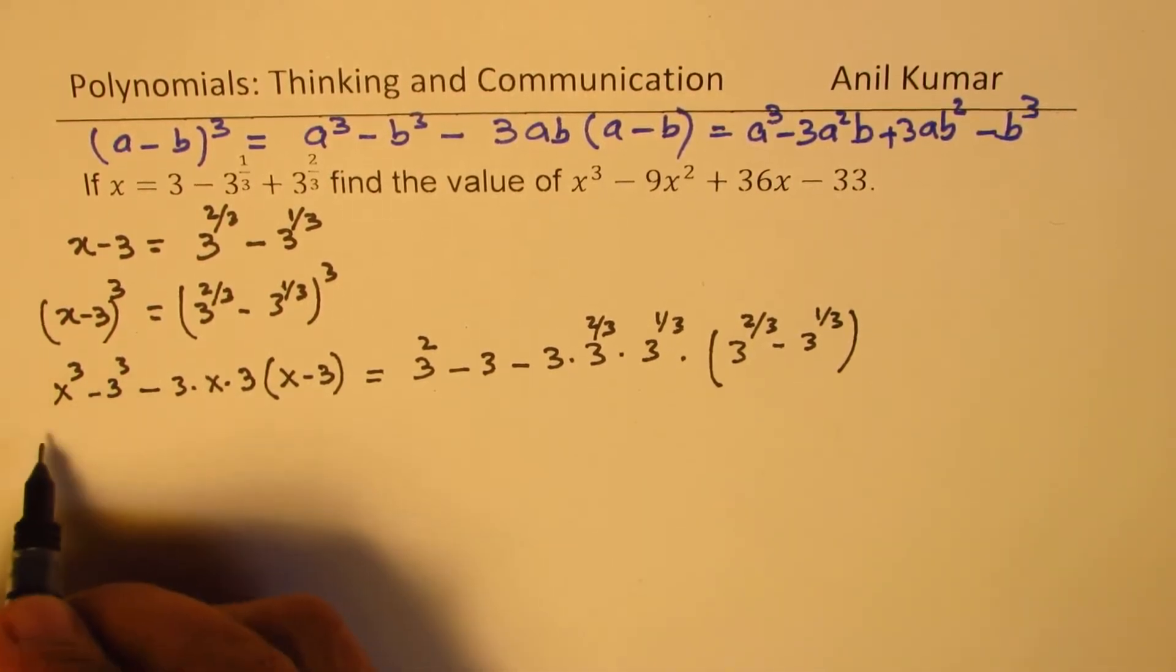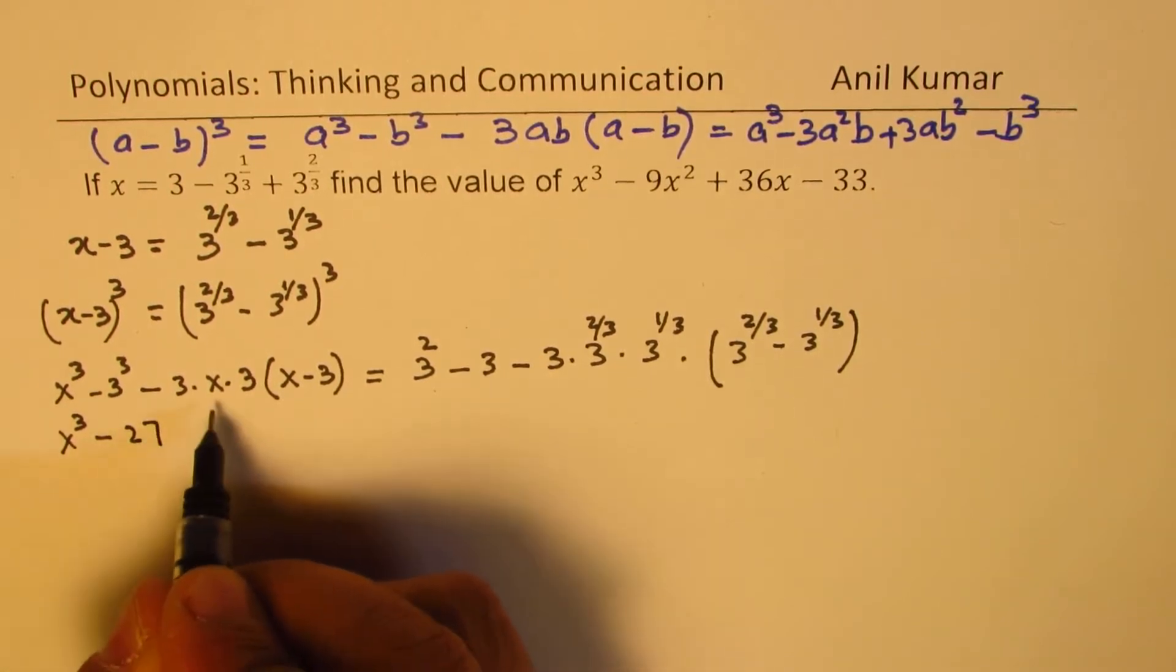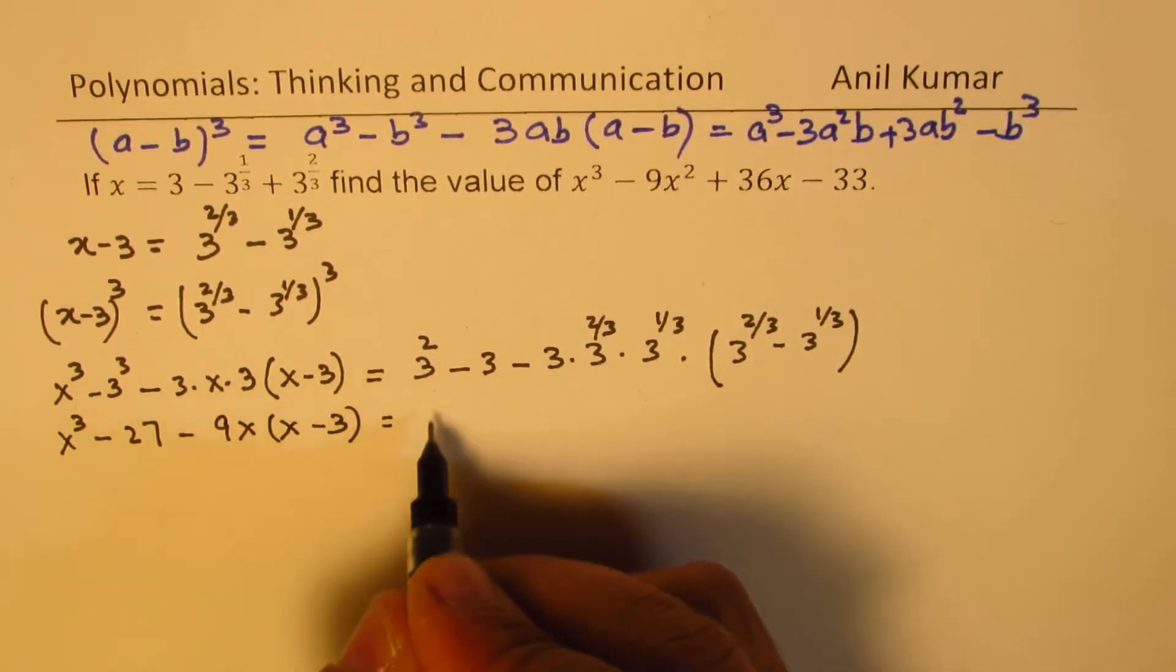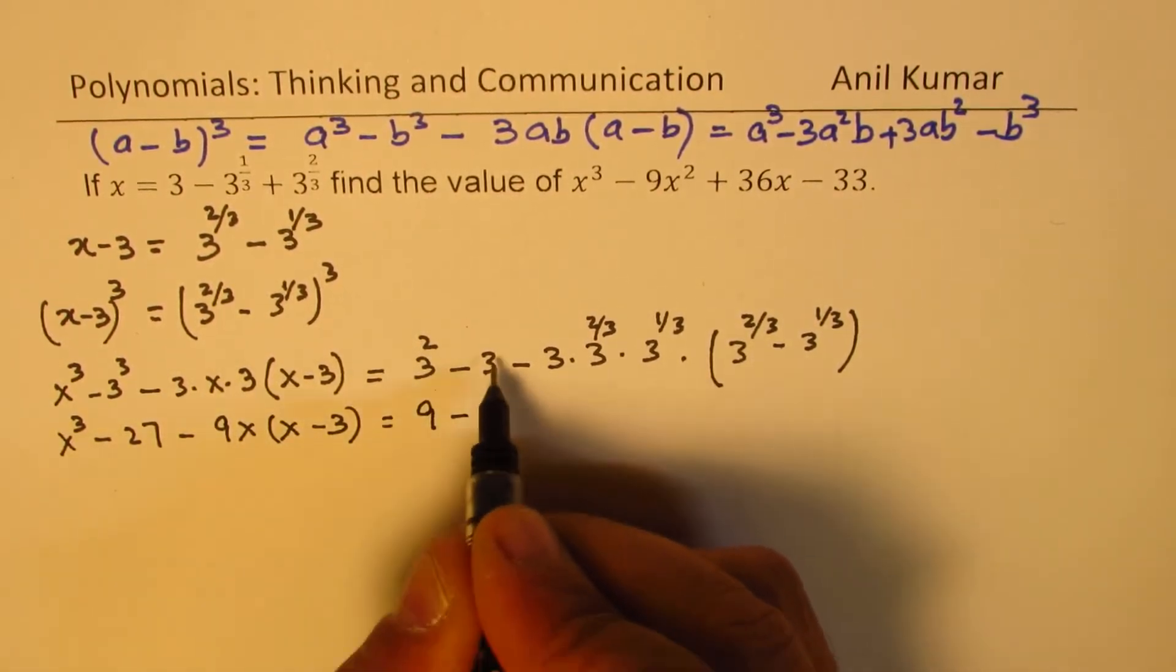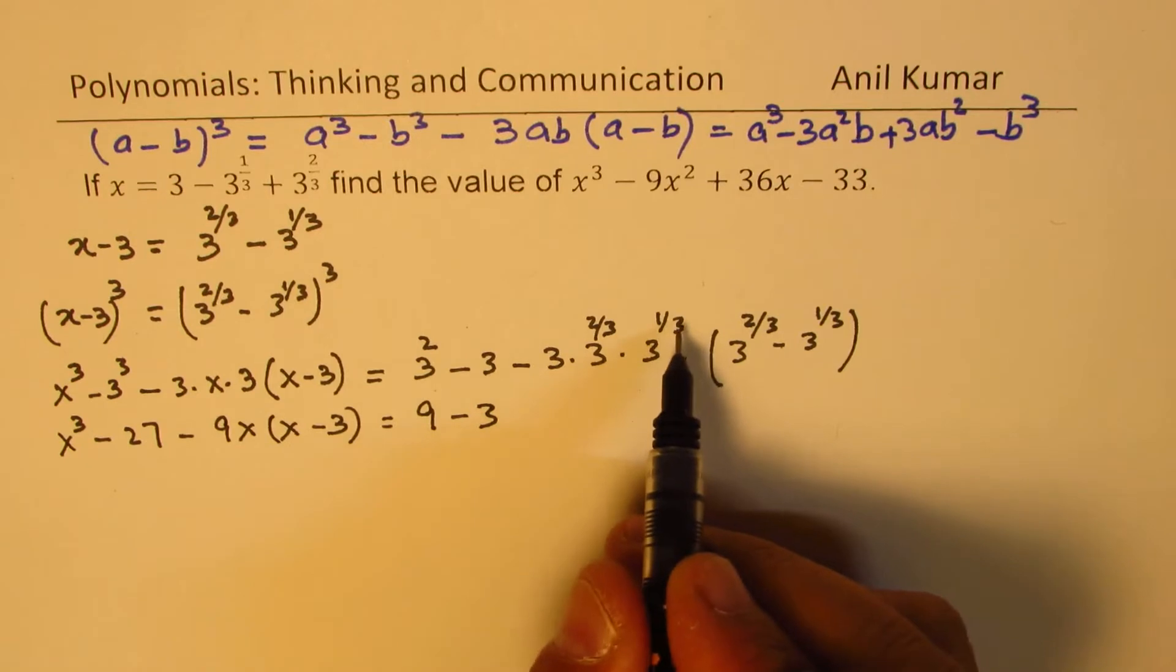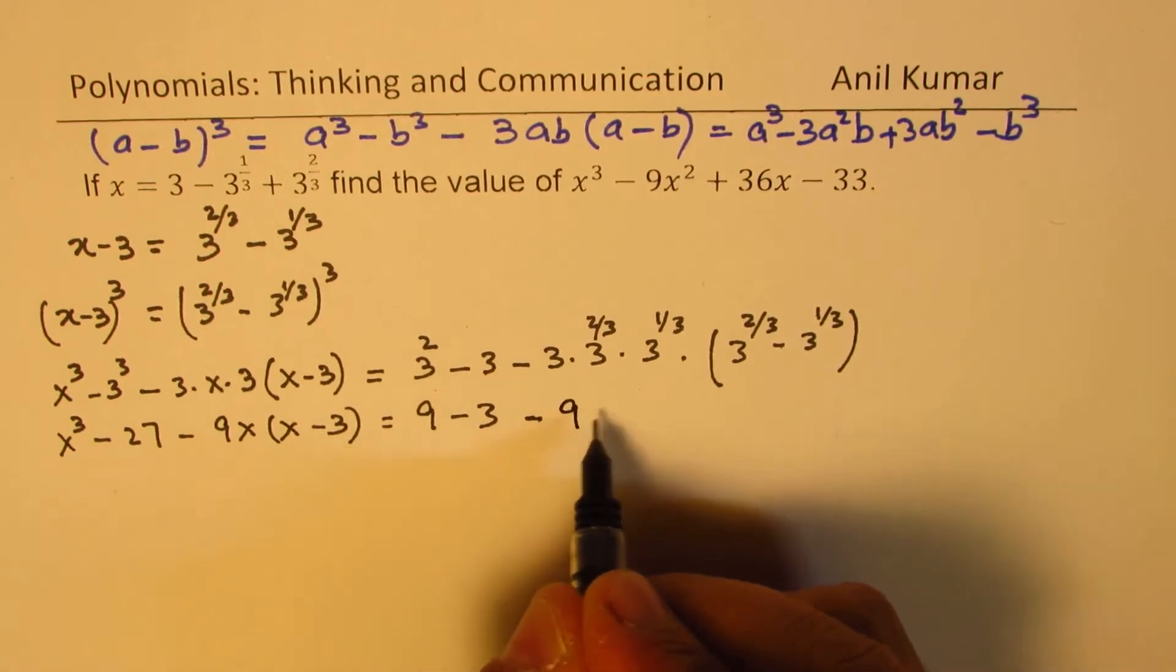So let's expand this. We get x cubed minus 27. 3 times 3 is 9, so we get 9x times x minus 3. Here we have 3 squared is 9 minus 3. So these terms, when you multiply, their exponents get added up. You get 3 to the power of 1, so it's just 3. 3 times 3 is 9, so we get 9 times.